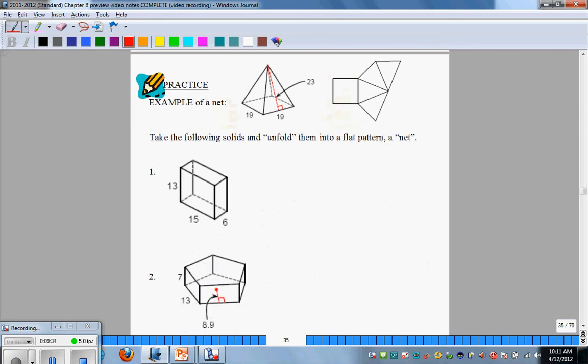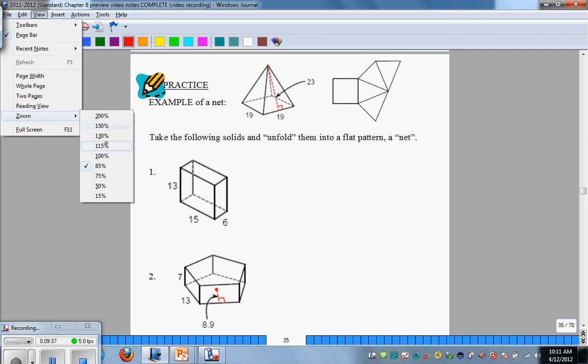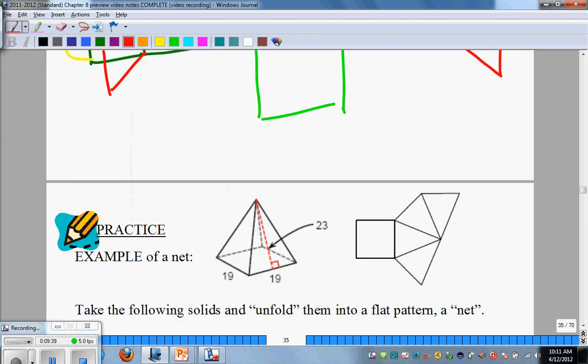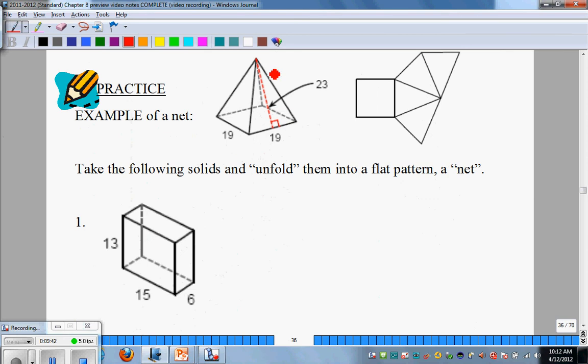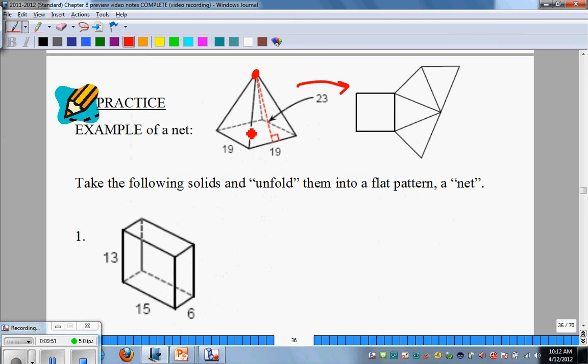What you see this would be considered a net - a two-dimensional flat pattern of something that can be folded into a three-dimensional object. This is a very good exercise for the visual side of your brain. Here's an example of a geometry net. You see this pyramid, if you were to take it and flatten it, it would look like that image. The 19 is along the base, and the 23 is down the middle of one triangle.